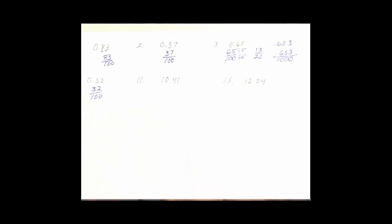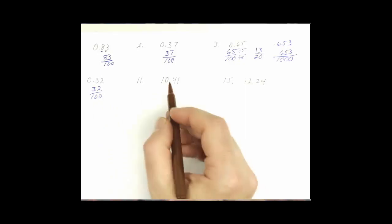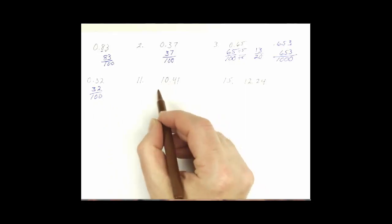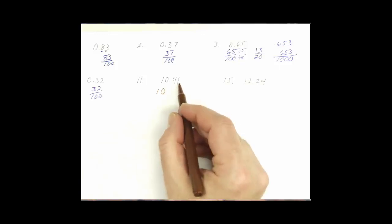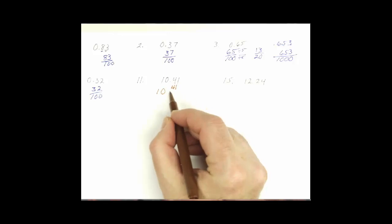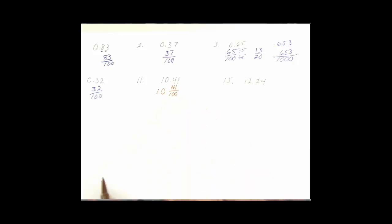Now we're adding whole numbers with it. So 10 and, the whole number is always going to be the whole number. 41 hundredths. Check to see if we can reduce.